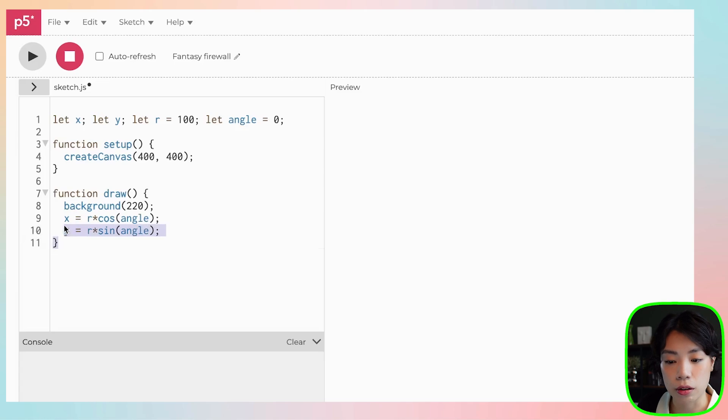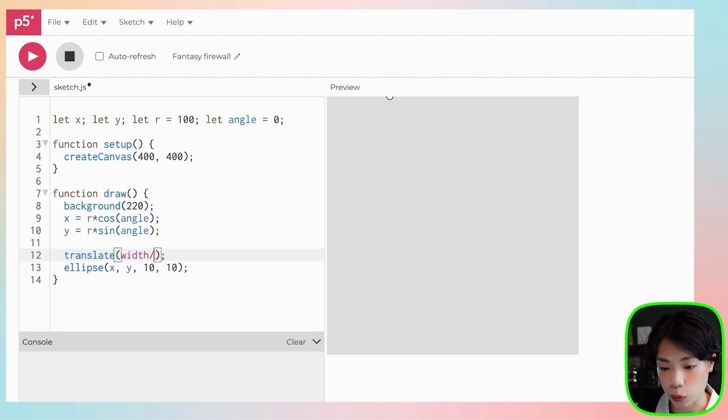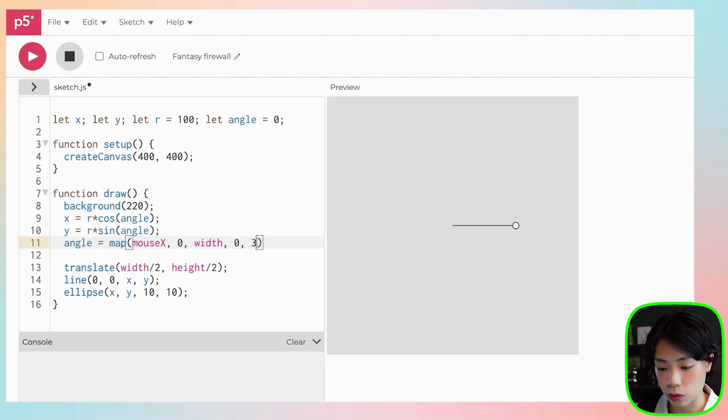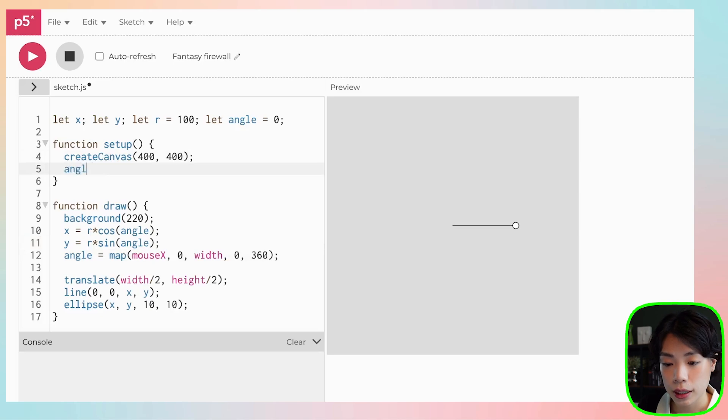Right now we have calculated the values of x and y and now I'm going to draw an ellipse at x and y with a size of 10. First I want to use a translate function to translate the point of origin to the center of the screen and then I'm also going to draw a line from 0, 0 to x and y. Let me also map the angle value to my mouse location from 0 to width to 0 to 360. And because I'm using the angle mode degree, I also need to change the angle mode here to degrees.